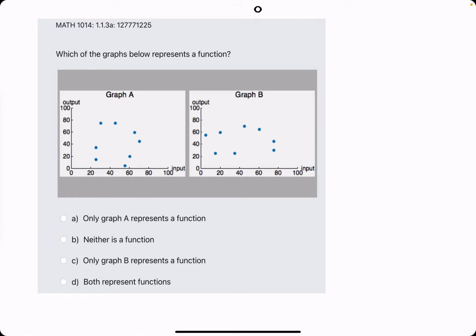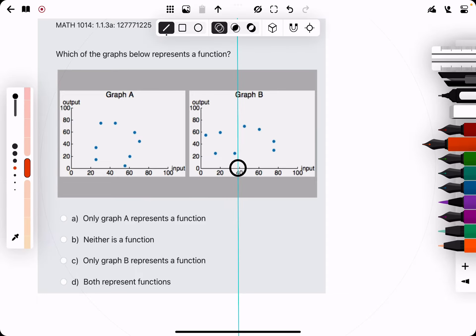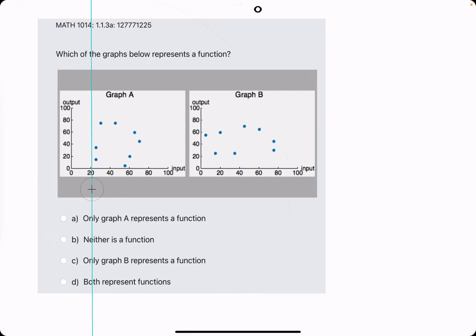In order to be a function, it must pass what's known as the vertical line test. What that means is, if we introduce a vertical line here, if there are any two points that lie on the same vertical line, then that graph does not represent a function.